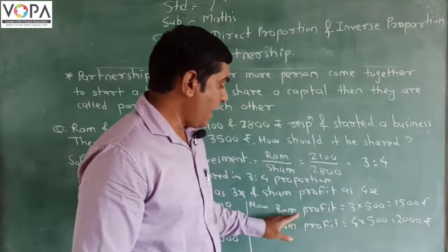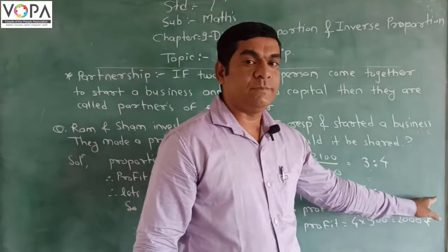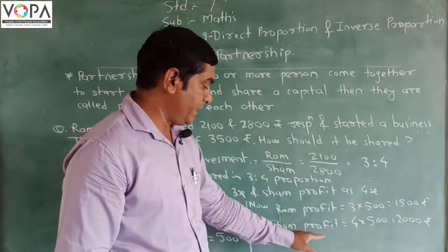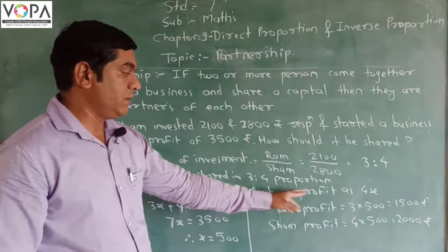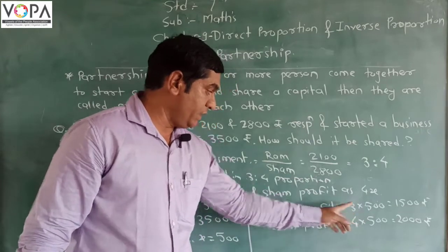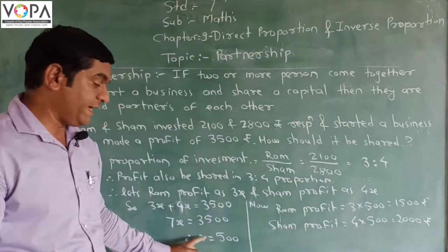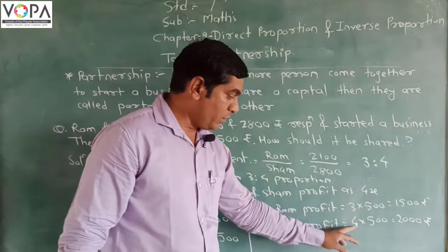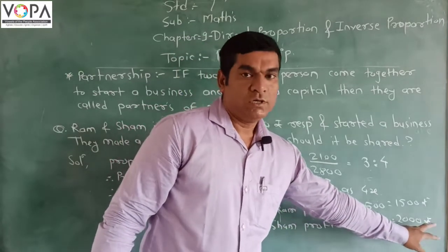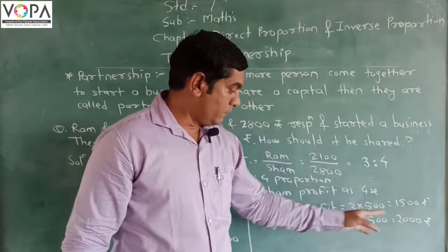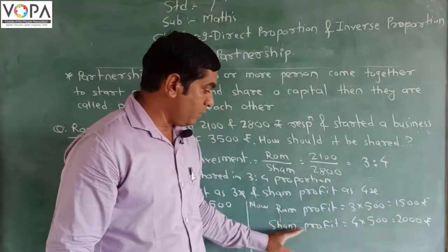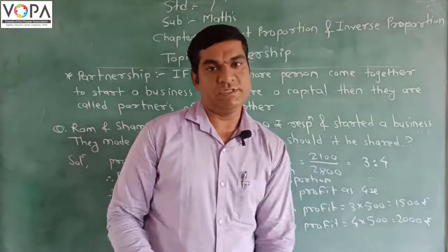Ram's profit is equal to rupees 1,500. Similarly, Shah's profit is equal to 4x, that is 4 × 500 = 2,000. So the profit of Ram is 1,500 rupees and the profit of Shah is 2,000 rupees.